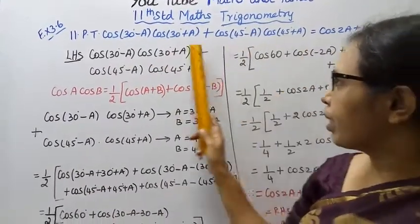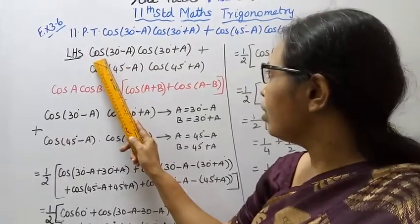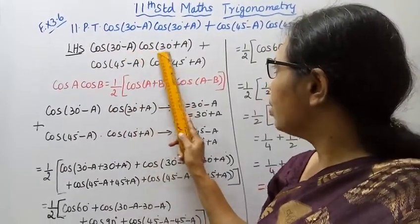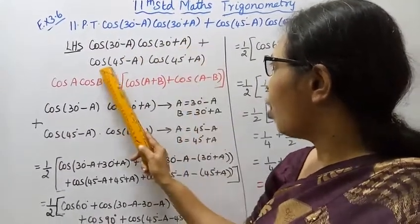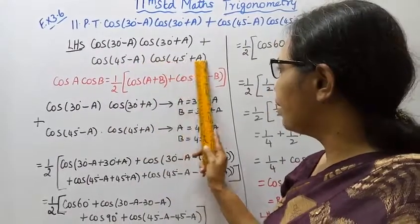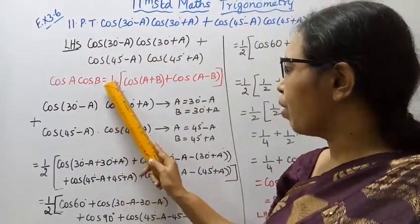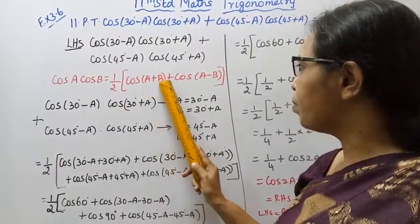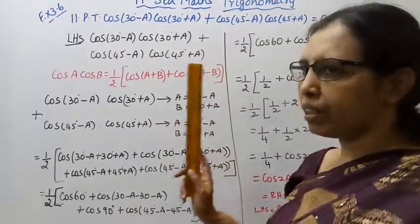Prove this, we take the left hand side. It is cos A cos B plus cos A cos B. Cos A cos B is 1 by 2, cos A plus B plus cos A minus B. This is the identity.